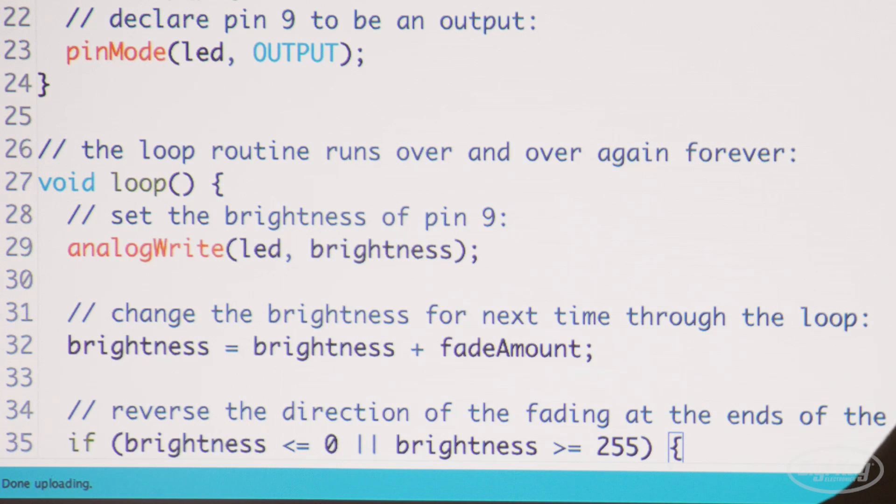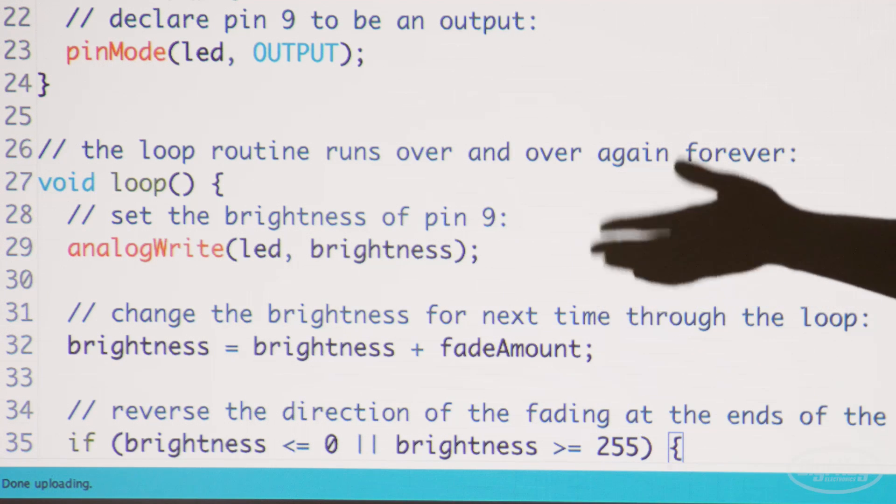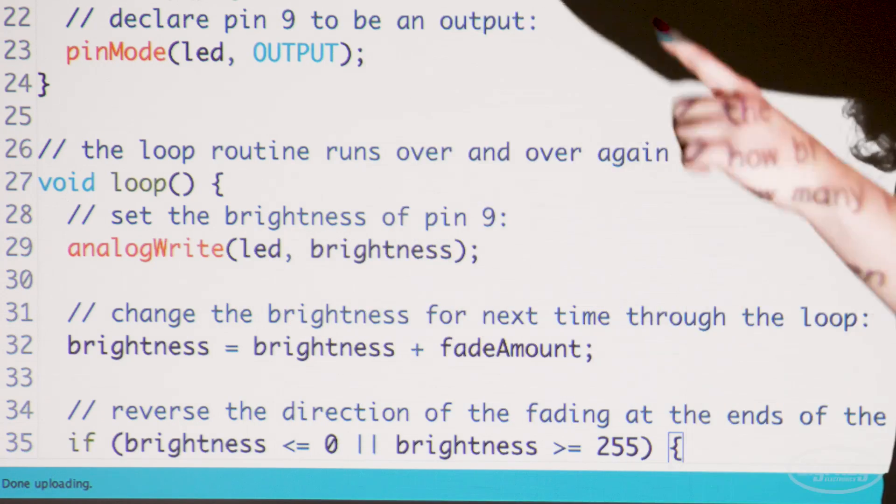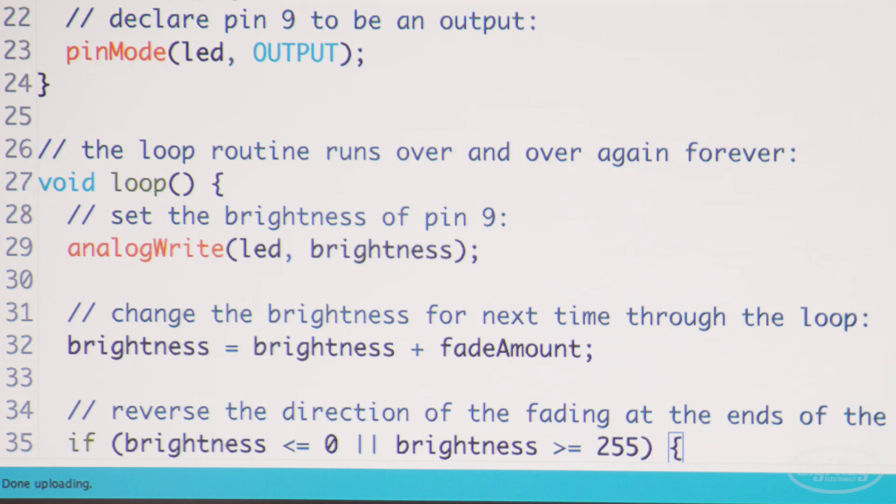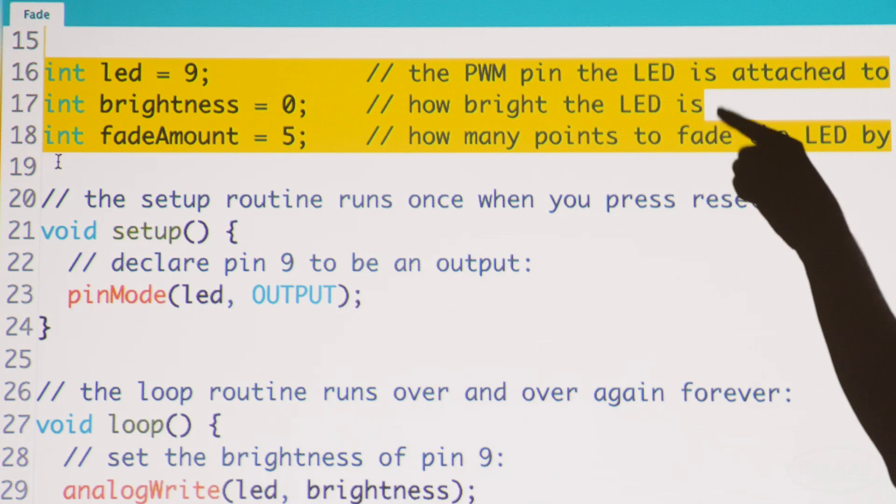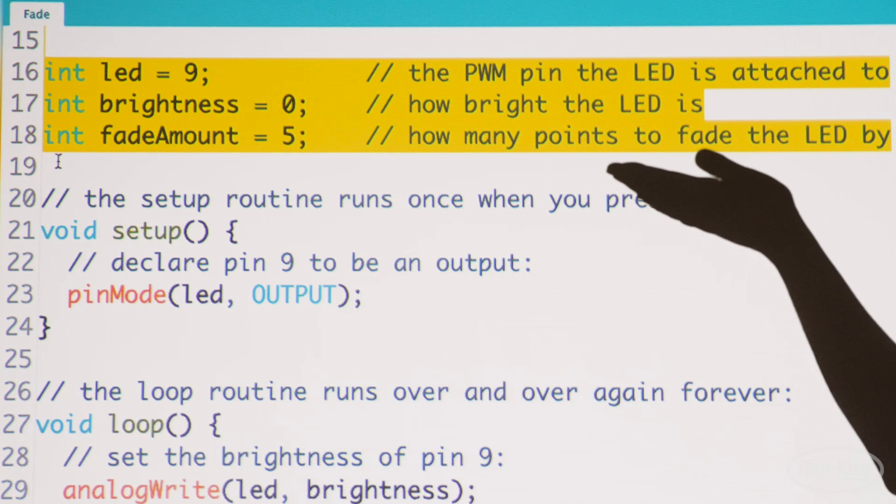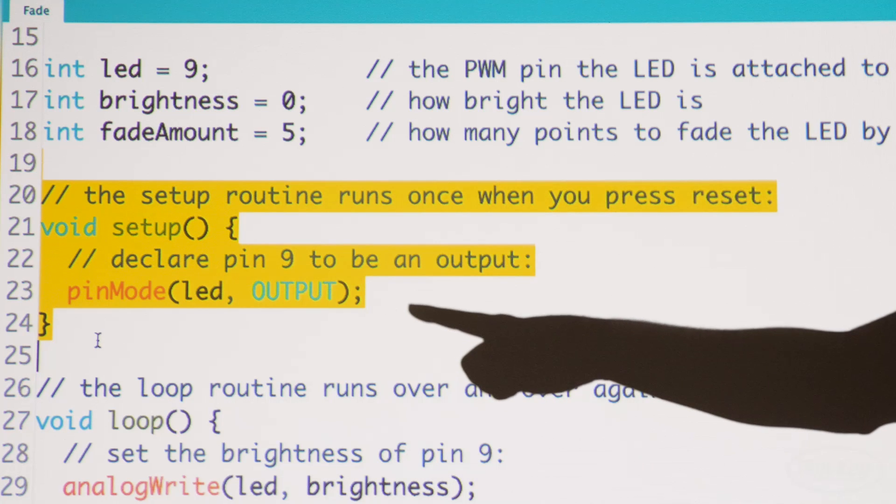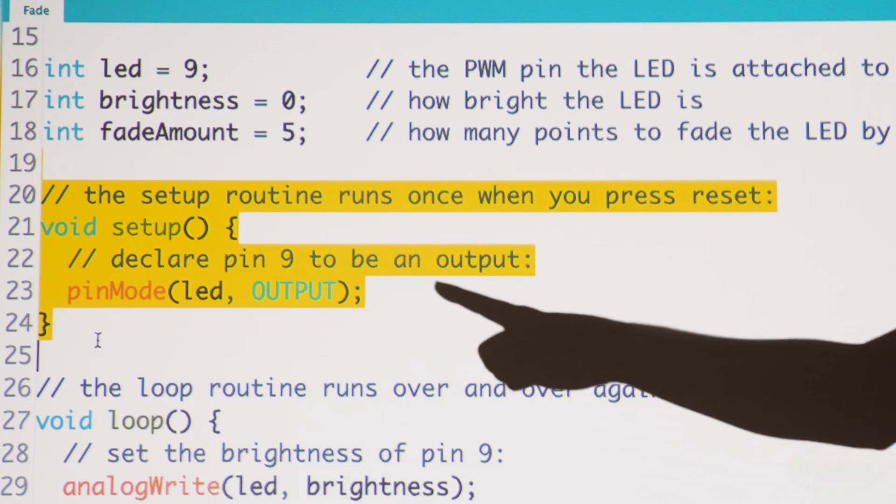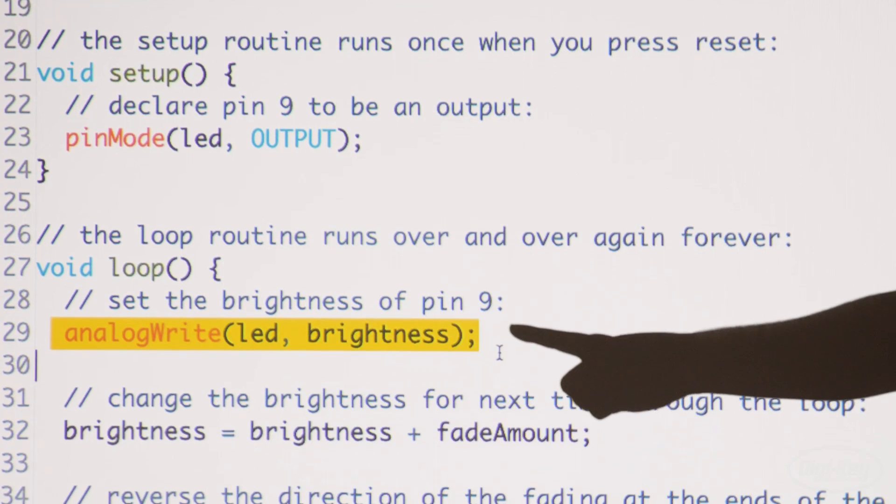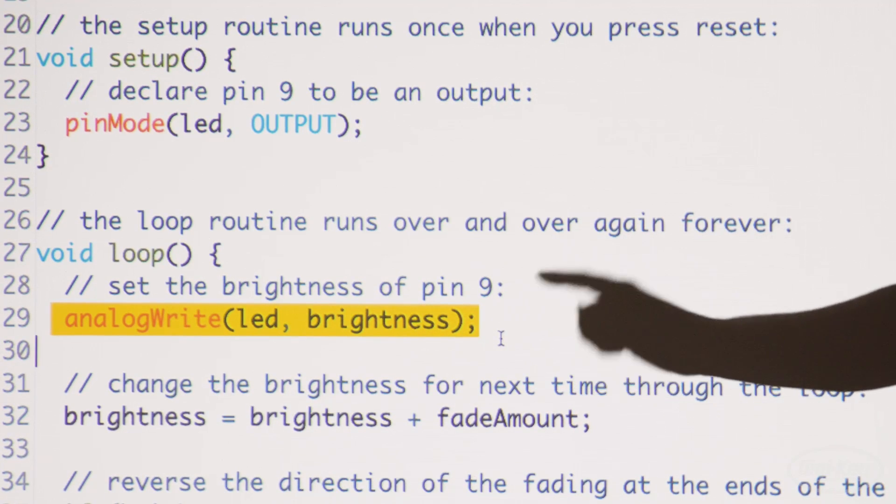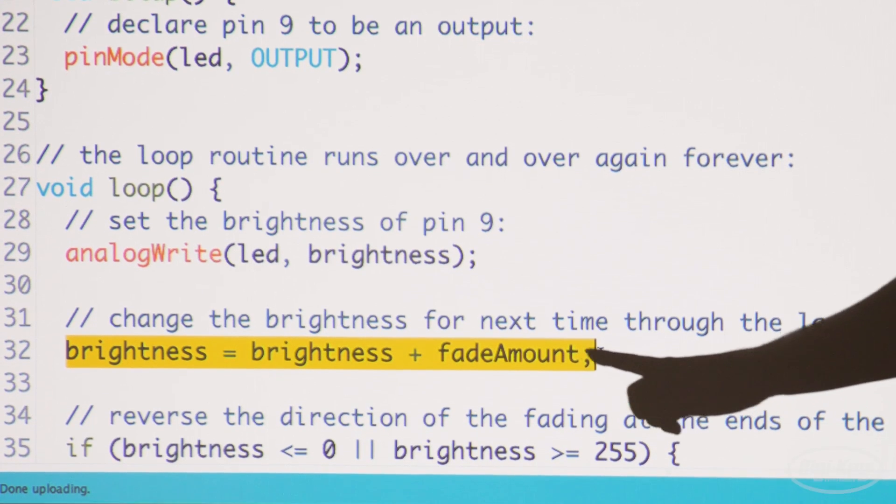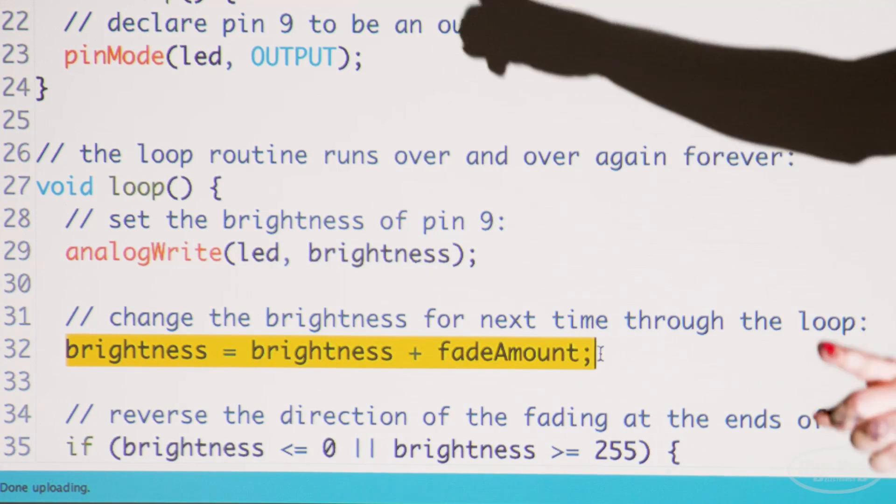Let's look at the code to learn how this fading is achieved. I've turned on line numbers in the Arduino preferences in order to better reference the different parts of the code. Lines 16 through 18 declare three variables used in the program. The setup configures pin 9 as an output on line 23. On line 29, the function analogWrite sets pin 9 to whatever the variable brightness is at the given time. On line 32, brightness is incremented by fadeAmount, which is 5.